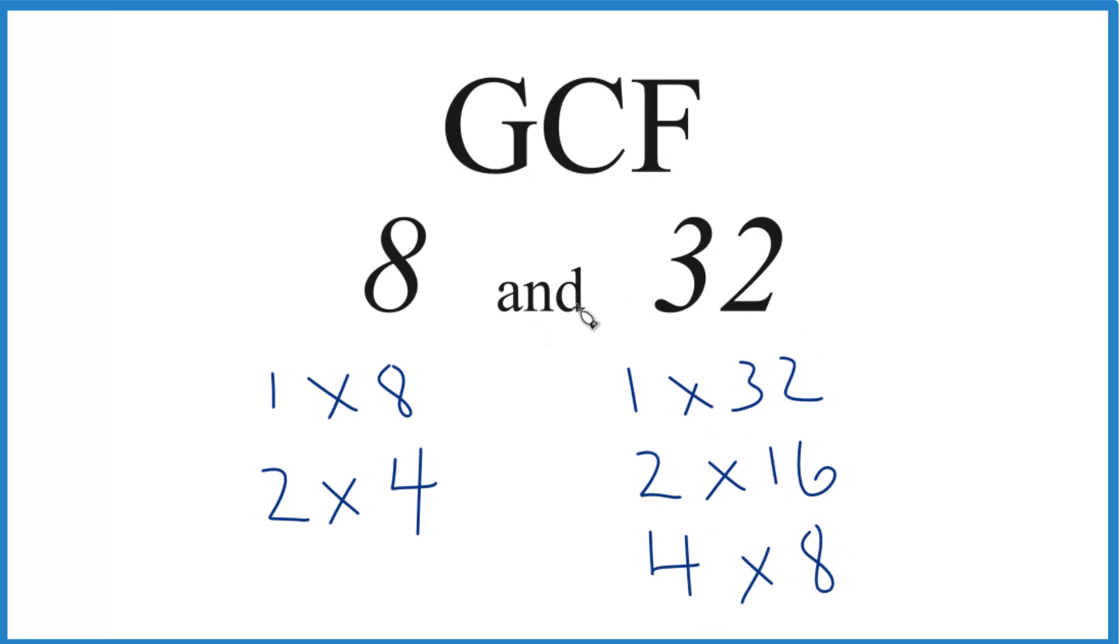So we have our factors. Let's look at the common factors. 1 goes into 8 and 32, 2, that goes into 8 and 32 evenly, 4, yep, common factor, but 8. 8 is the greatest common factor between 8 and 32.